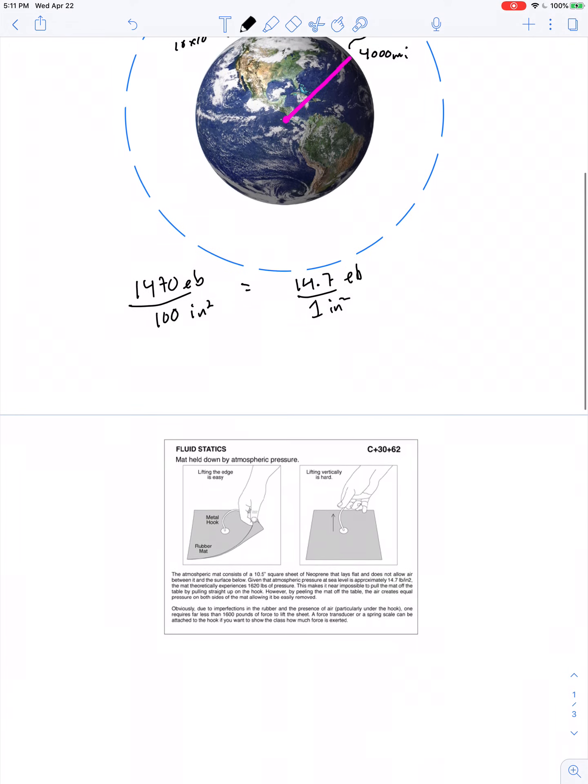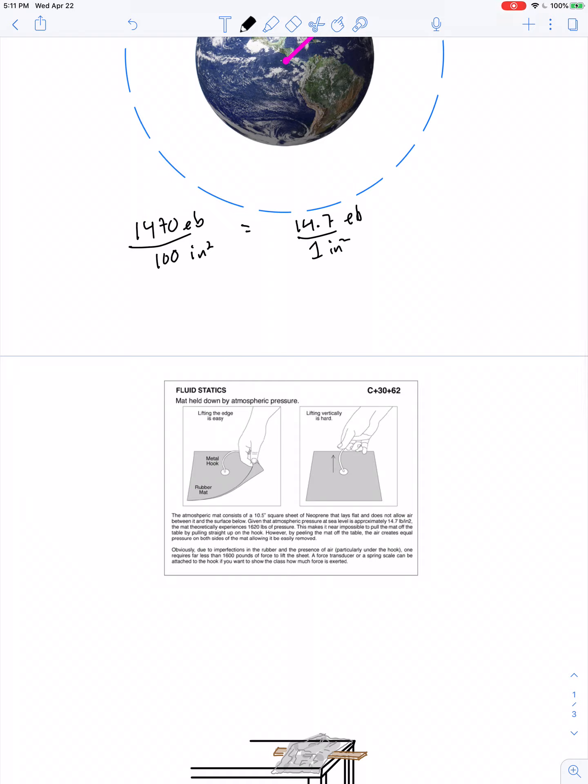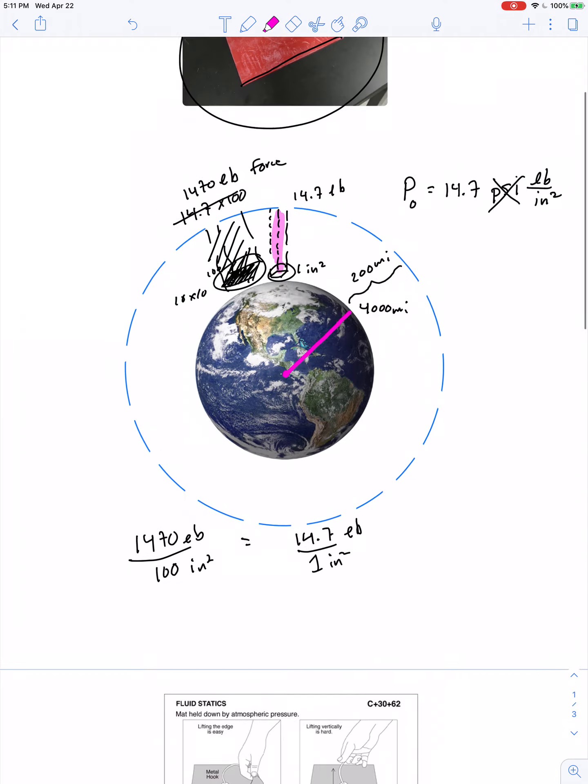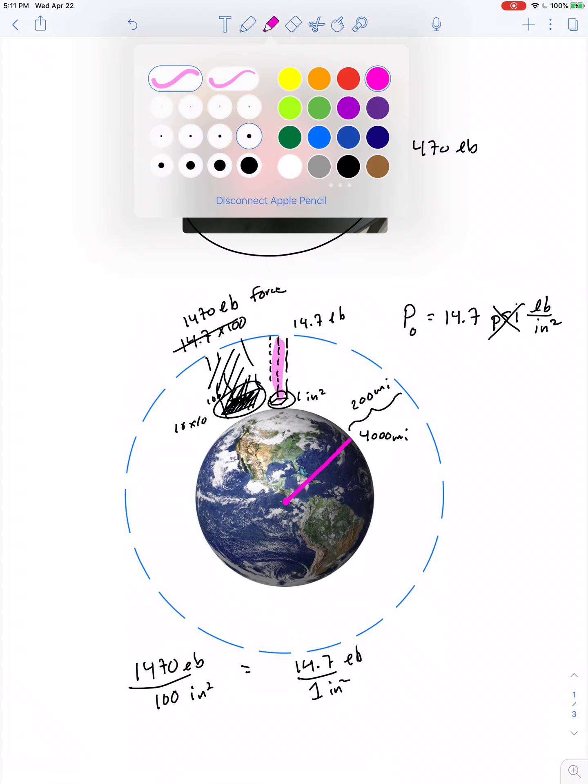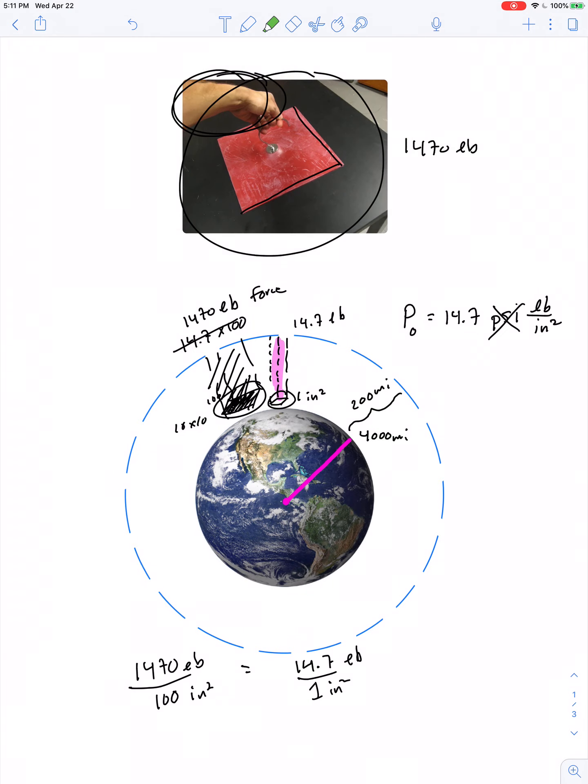Actually, I found a copy of the instructions for this, and it says that the rubber sheet's about 10 and a half inches. So 10.5 squared would give you more like a force of 1,620 pounds. And it goes on to say that when you pull hard enough - and I found this to be the case - you really don't have to exert that much force to lift it. If you pull really hard, you can get it to lift.